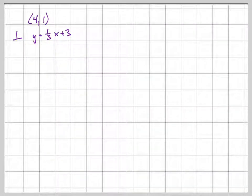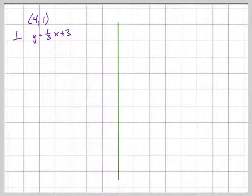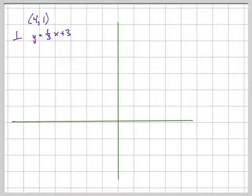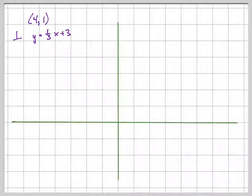Let's talk about this problem. Write the equation of a line that goes through the point (4, 1) and is perpendicular to the line y = (1/3)x + 3.